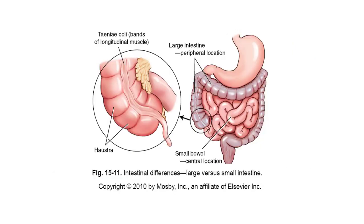A series of pouches along the large intestine called haustra assist in additional absorption of nutrients and can provide secretions to allow stool to pass. Muscular bands that help form the haustra are called teniae coli.